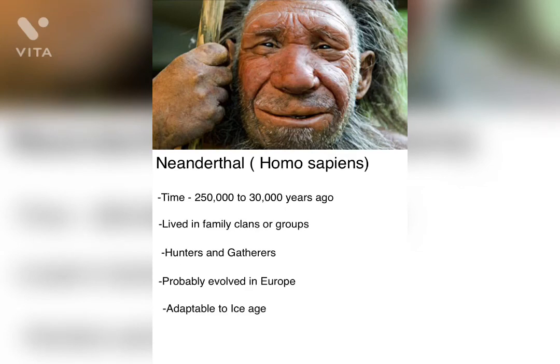Now let's have a look at the fifth stage, that is Neanderthals, also known as Homo sapiens. They lived in a time period of about 250,000 to 30,000 years ago. They were the first to live in family clans or groups, meaning they are the ones who started to live in kinship relationships.